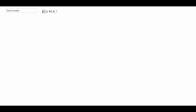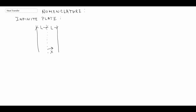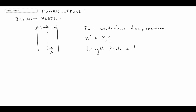The nomenclature is very important when solving these problems. Beginning with the infinite plate: the infinite plate is 2L thick and X is denoted from the centerline. T-naught is the centerline temperature. We introduce a variable X-star, which is our spatial location non-dimensionalized by the length scale L. So the length scale is just L.